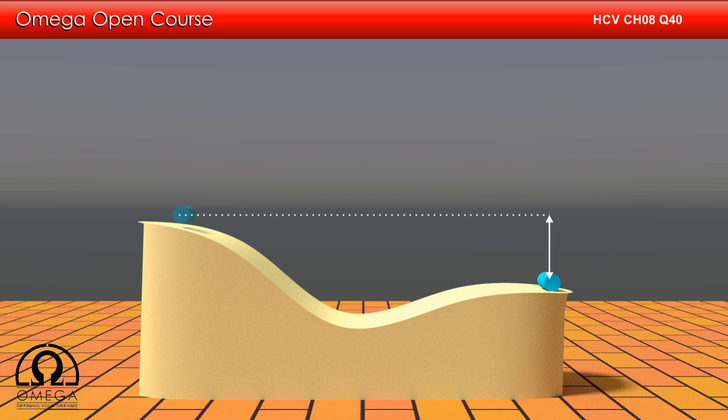Since the block is at rest in the beginning and at the end, the net change in its kinetic energy is 0. As per the work-energy theorem, the net work done by all the forces on the body is equal to the change in its kinetic energy. Since the change in kinetic energy in this case is 0, the work done by all the forces must be 0.